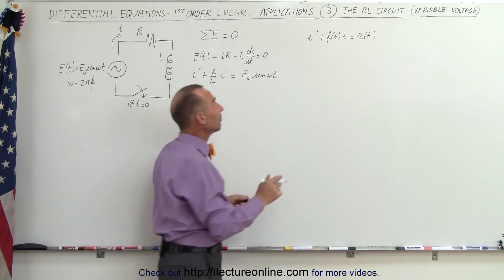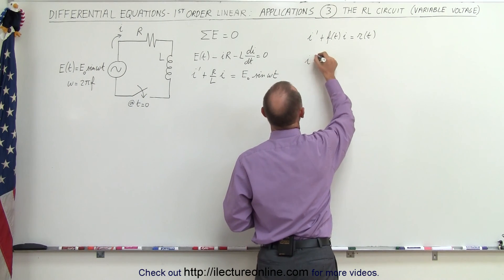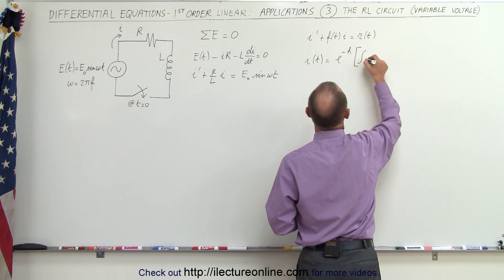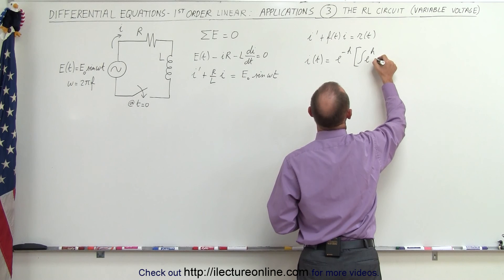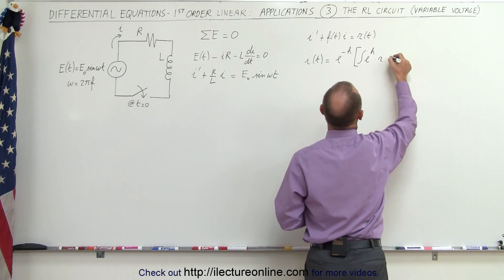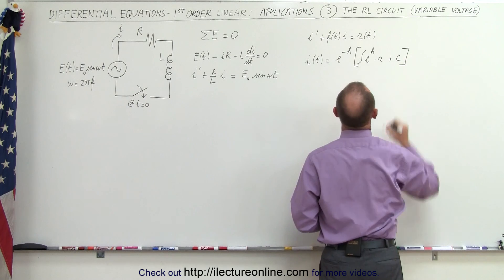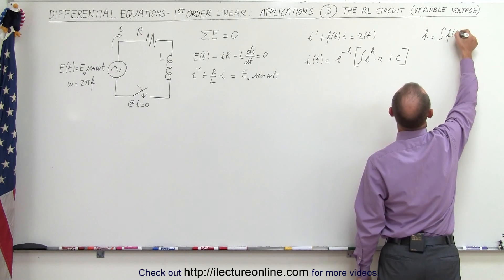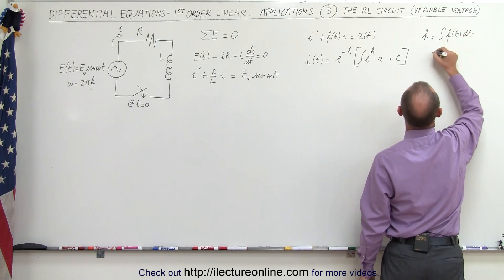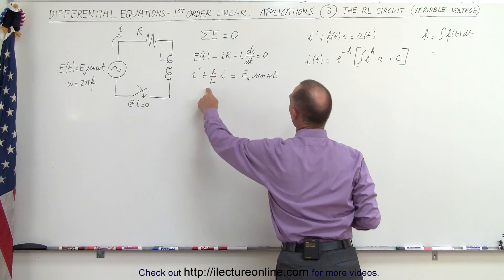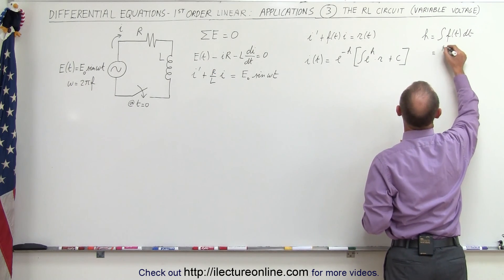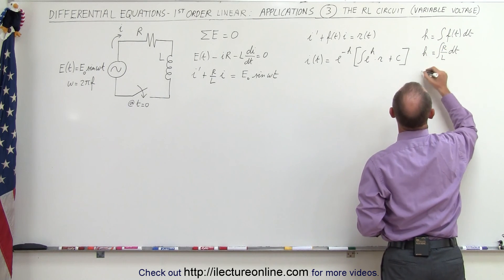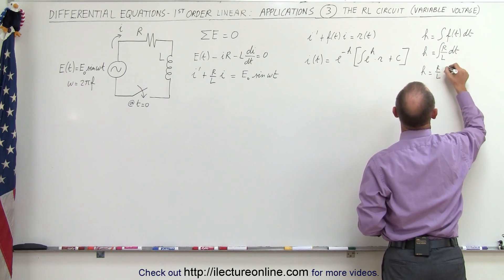The solution can be found by writing I as a function of time equal to E to the minus H times the quantity the integral of E to the H times R as a function of time, plus a constant of integration. Here H equals the integral of F of t dt. In this case F of t is R over L, so H equals R over L times t.